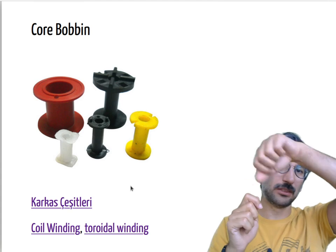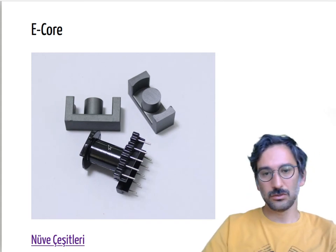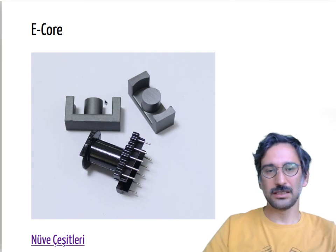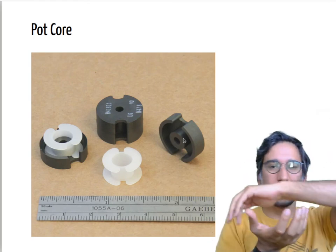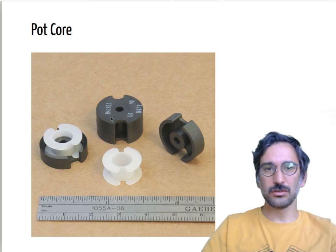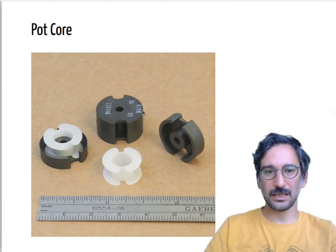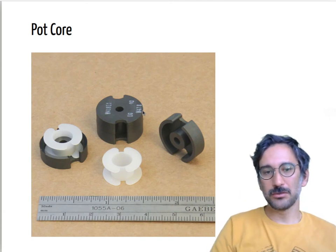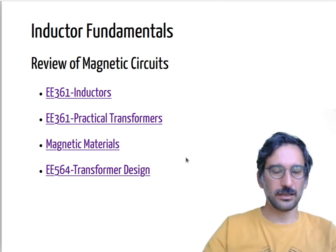The winding is wrapped around a plastic carcass (bobbin), placed inside the core, and the E-core halves are closed around it. Pot cores are similar to C-cores but close all around the outer circumference — slightly more expensive, but because the core encloses the outer surface, leakage flux and EMI problems are significantly reduced. They may be more useful if you are worried about EMI or leakage flux affecting adjacent circuits.